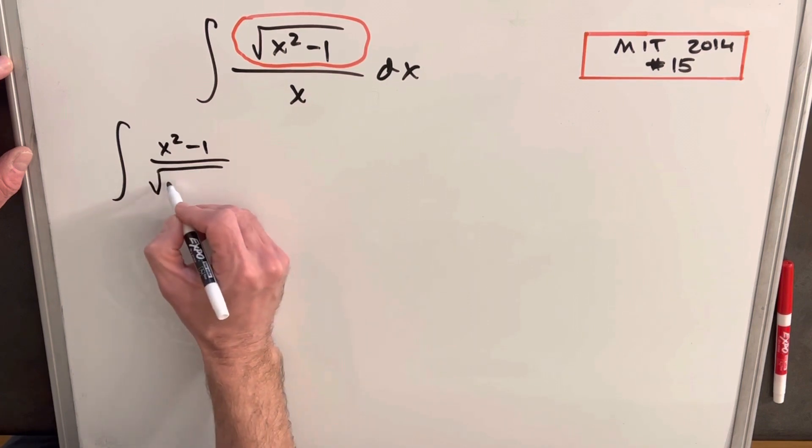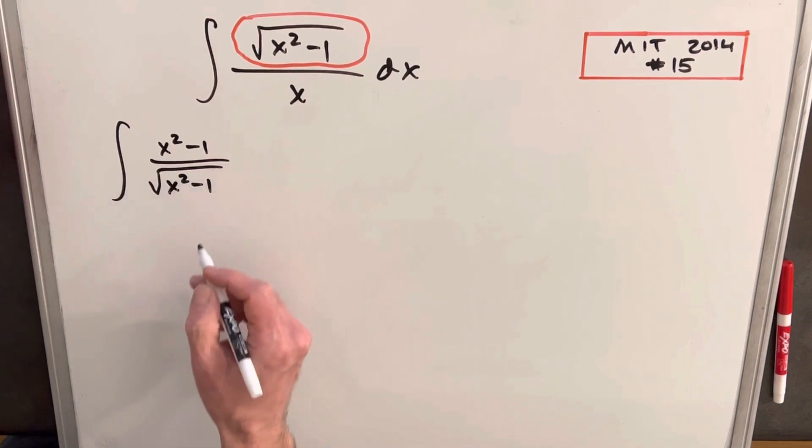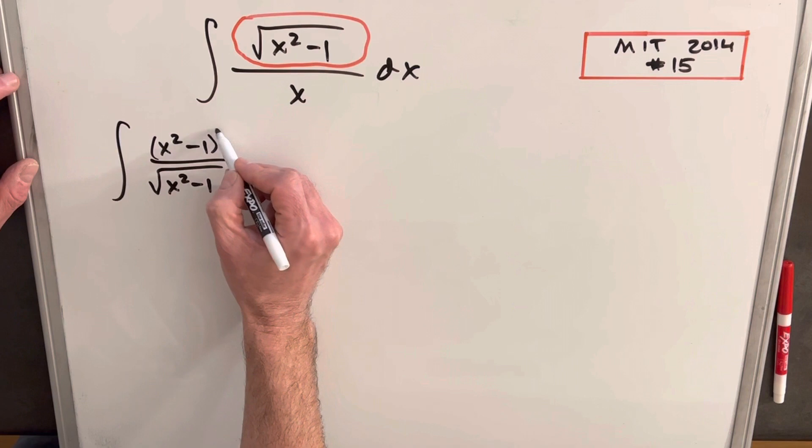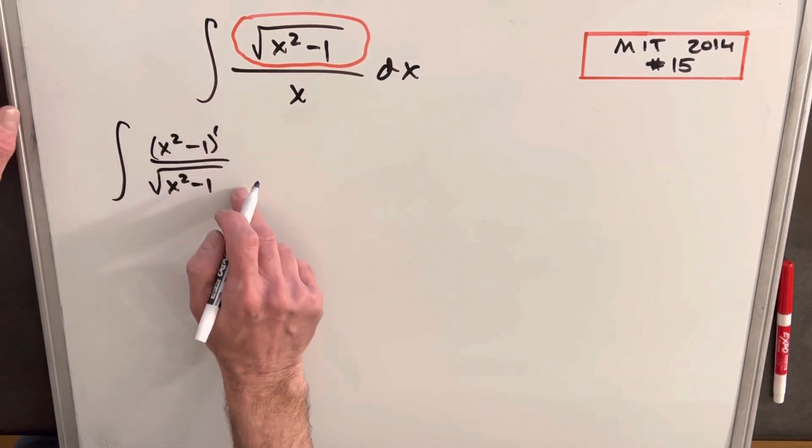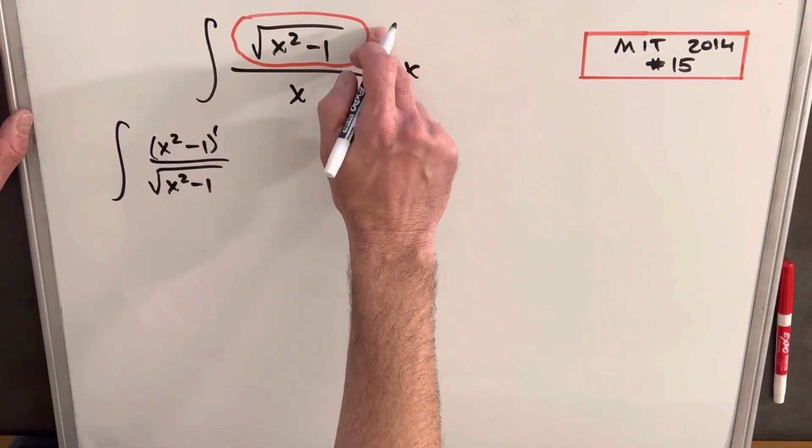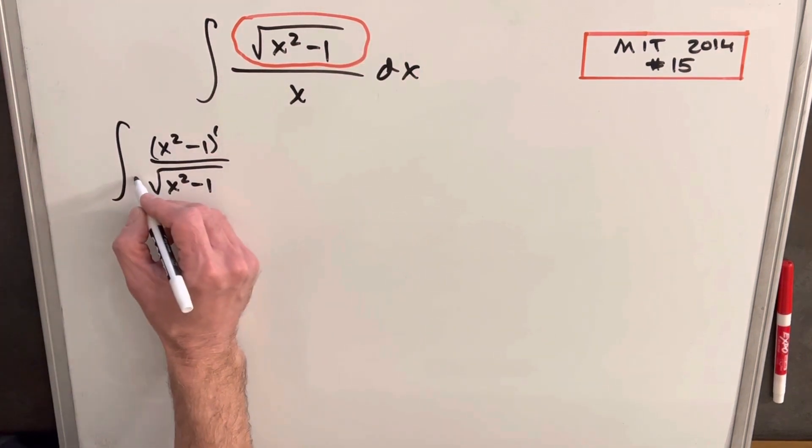And then we can write this as over x times the square root of x squared minus 1. Just noticing, if there was a 1 power here and this is a half, if you divide those, you get back to a half power, the same way we have there. Then let's not forget our x.